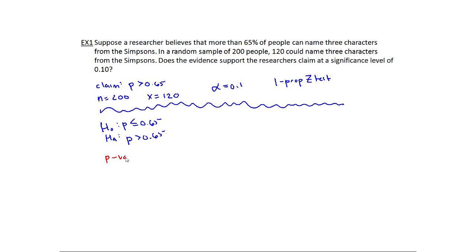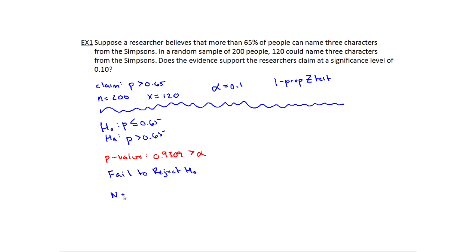I end up with a very large p-value of 0.9309. This is certainly bigger than alpha — bigger than any alpha we could have. So automatically I know I fail to reject H-naught. That does not change here. If I fail to reject H-naught, that means there's no evidence for H-A. So when the question asks does the evidence support the researcher's claim at 0.10, I say no. There is no evidence that more than 65% of people can name three characters from The Simpsons.